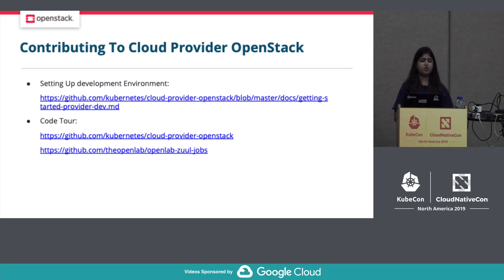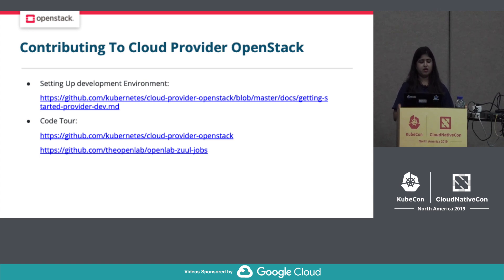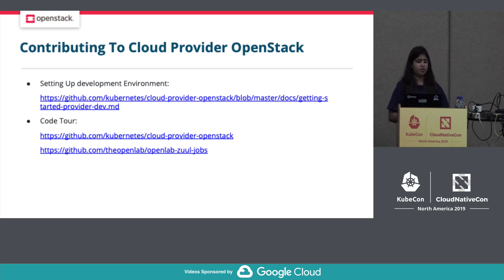We also have examples for all the plugins — if you want to use any particular feature of a plugin and how to do that, all the examples are available here. We use a makefile for building code. All the Docker images and Dockerfiles are available here. We run the CI job for Cloud Provider OpenStack repository with the help of OpenLab. All the manifests for the CI jobs are located in the OpenLab repository.